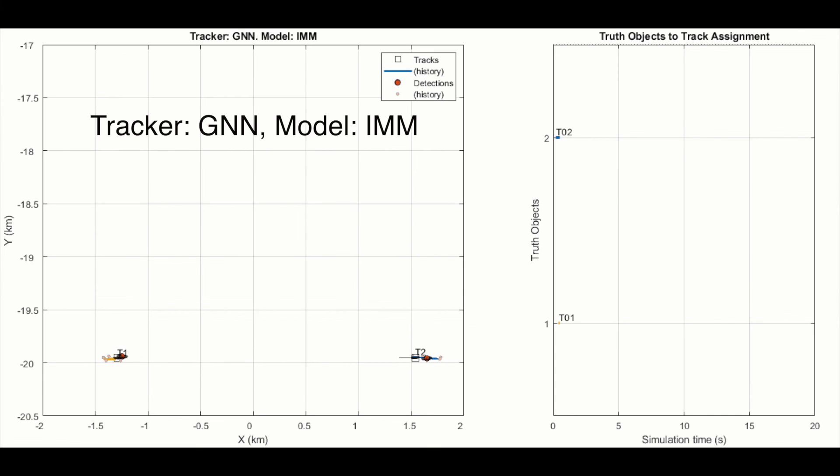For the first one, I'm using Global Nearest Neighbor for data association, and an IMM for the estimation filter, since these objects are maneuvering. Notice that when the objects are far from each other, it's obvious which objects and detections go together, and the GNN algorithm does a pretty good job. Object 1 is assigned to track 1, and object 2 is assigned to track 2. This is what GNN is good at, matching data with tracked objects when they are sparse.